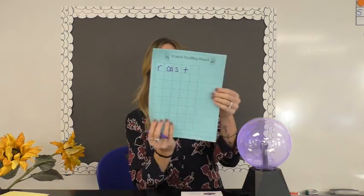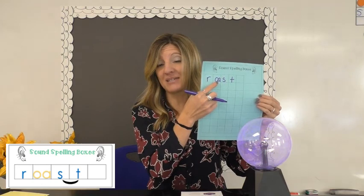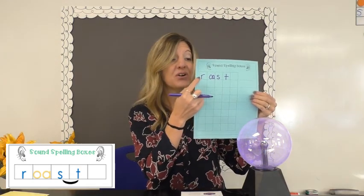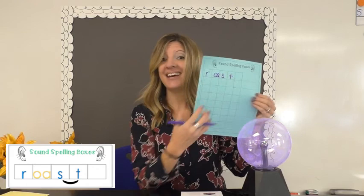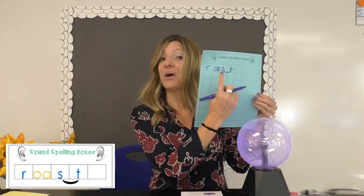Let's take the word 'roast.' Tap out the sounds in 'roast' and capture them in your sound boxes. Notice that I put OA in one sound box because it's making one sound. I also recognize that S and T make an end blend, so they each get their own boxes because I can hear each sound — but I can make a connector to show it's an end blend.